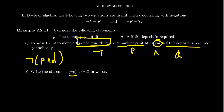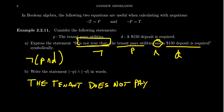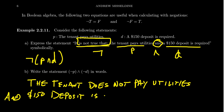What about not P and not D? In that situation, you would get something like: the tenant does not pay utilities, and a $150 deposit is not required. Those are pretty nice conditions — maybe you're renting to dear old grandma with no requirements for her. So these are not the same statement.